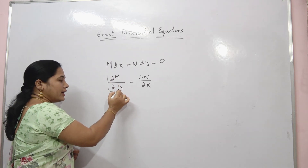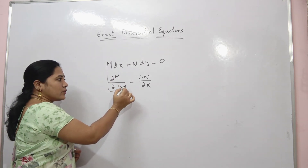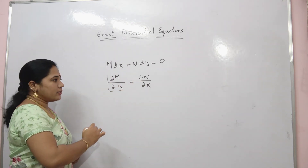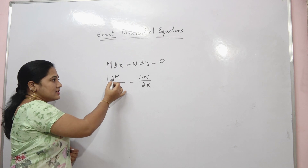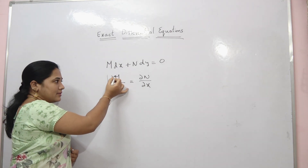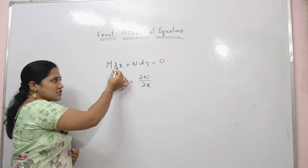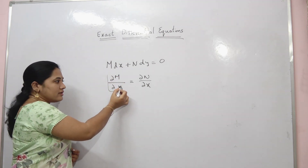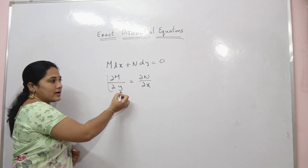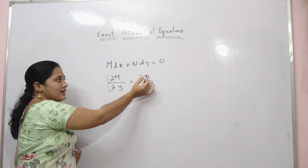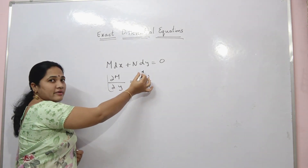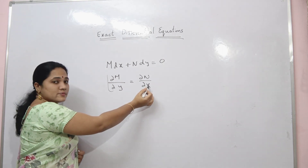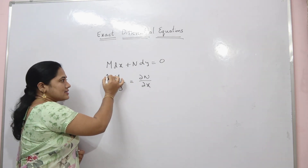It should satisfy ∂M/∂y equals to ∂N/∂x. This is a partial differentiation. Here M is a function of x and y but we are differentiating only with respect to y, and N is a function of x and y but we are differentiating only with respect to x.